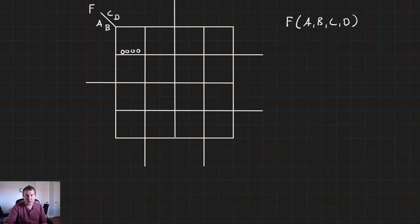And then we're going to move across in a gray code sort of fashion. We're going to go 0, 0, 0, 1, then 0, 0, 1, 1, then 0, 0, 1, 0. Then 0, 1, 0, 0, then 0, 1, 0, 1, then 0, 1, 1, 1, then 0, 1, 1, 0. So these first two rows are exactly the same as the three-variable k-map.